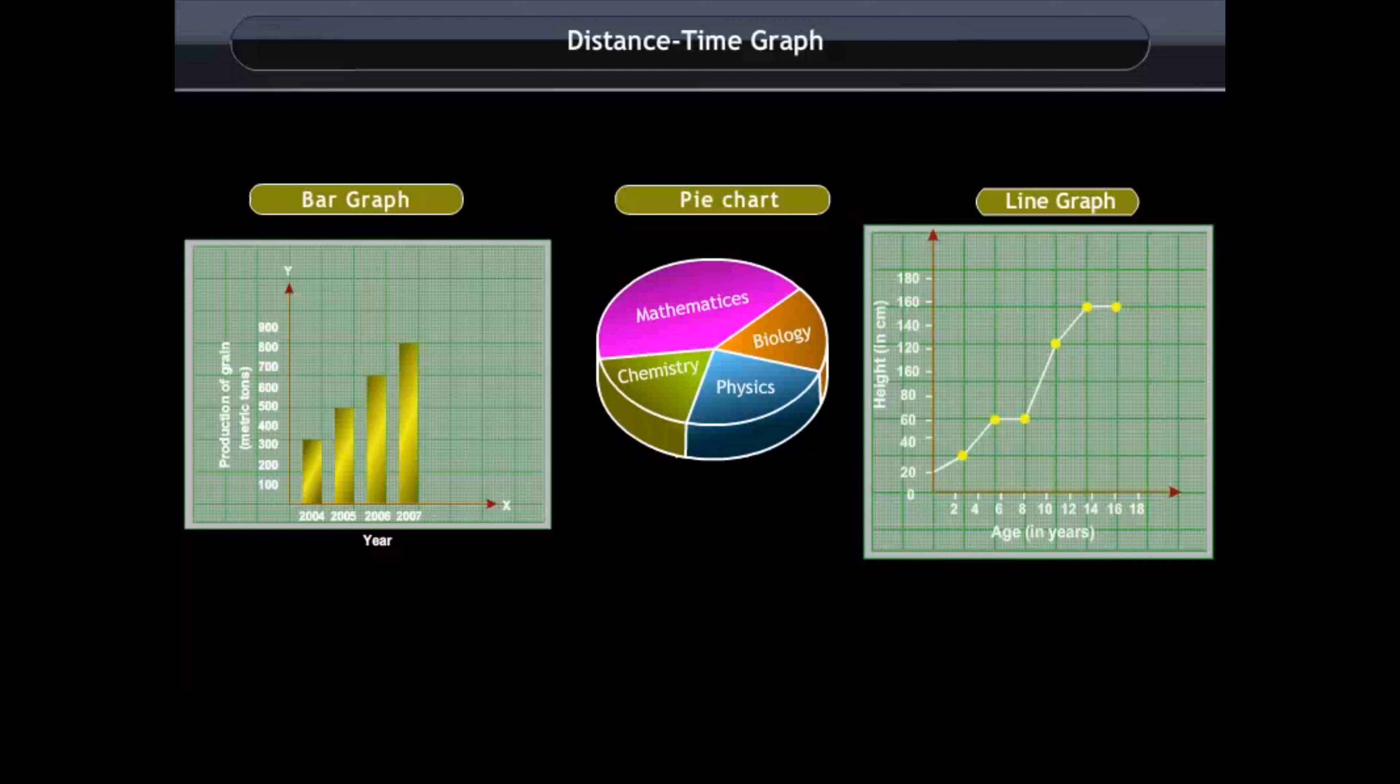Let us learn how to make a distance time graph. Take a sheet of graph paper and draw two lines perpendicular to each other as shown in the figure.